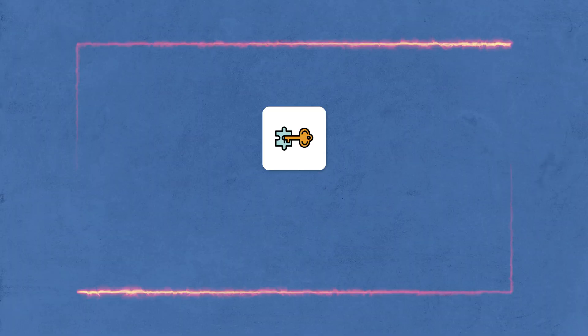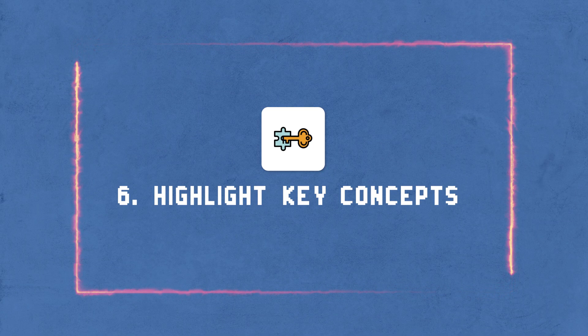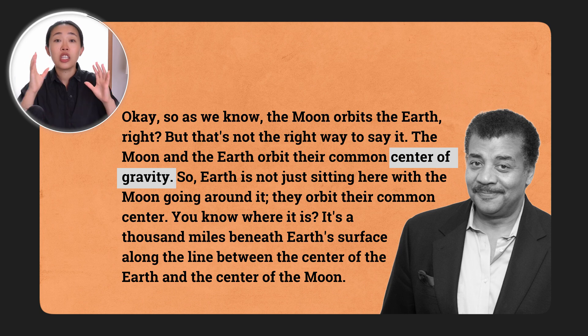Now comes framework six: define and highlight key concepts. What we usually do — the easy pitfall — is lay out the topic and explain three things, and then give the conclusion, with no emphasis placed on different things. The listener doesn't know where to pay attention. Instead, you want to really highlight the concepts that people don't know. Neil knows that most people don't know anything about the center of mass, so he highlights it.